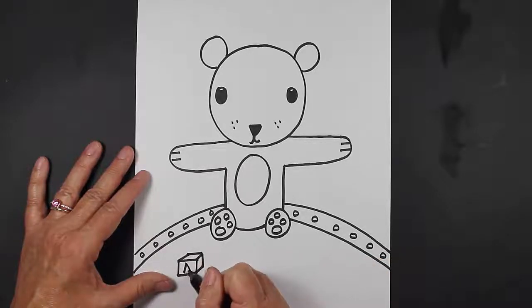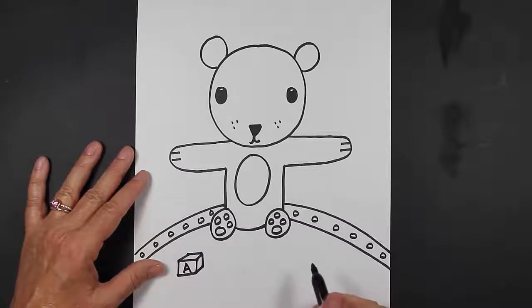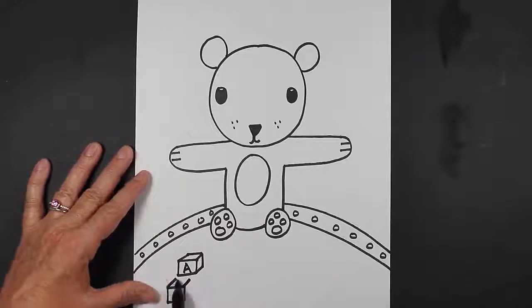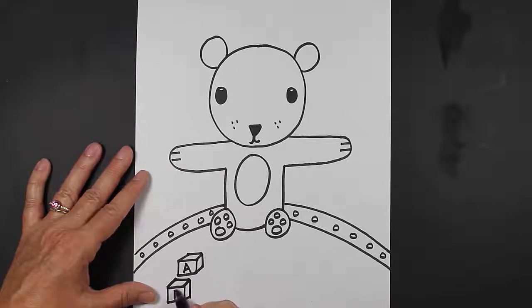I'm going to put an A on it. Let's make another block. So let's try that again. You start out with a square. You come back with two diagonal lines. And then you close them up like that. So this is block B.